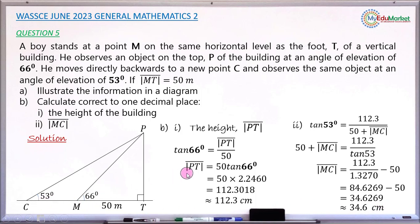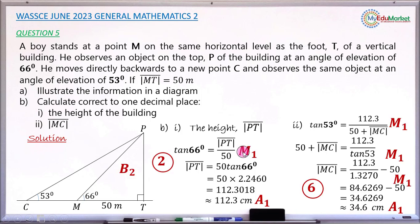Let me share the distribution of marks as contained in the official marking scheme. The very first mark is a B2 mark, awarded for changing all the statements into a drawing — that is, answering question A. All points, angles, and distances must be shown accurately. If any one is wrong or missing, you lose a mark. So question A is worth two marks.